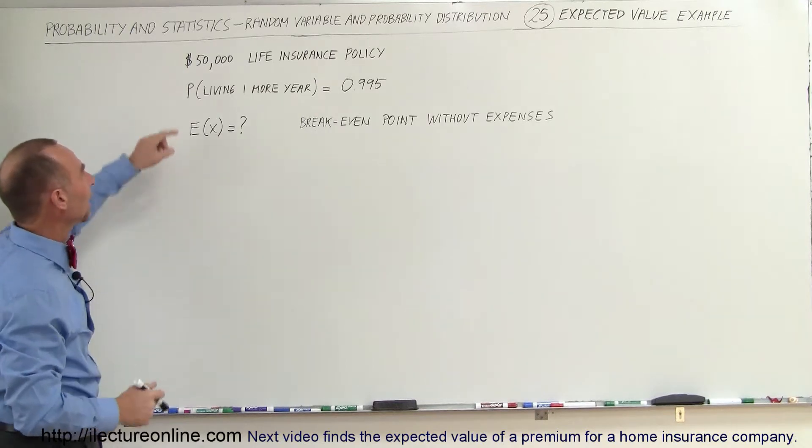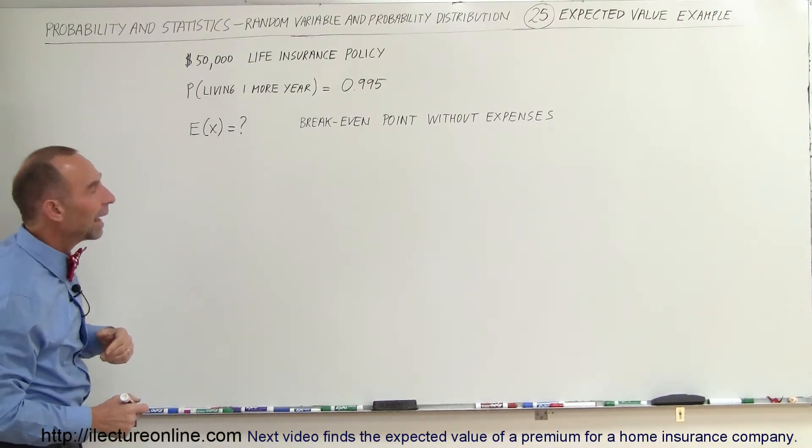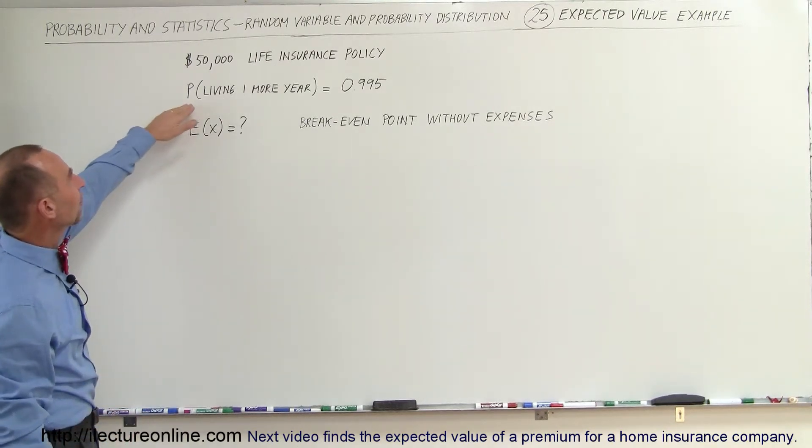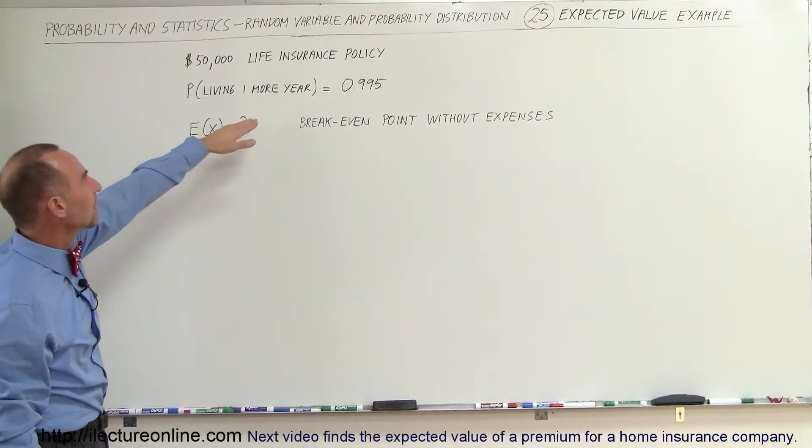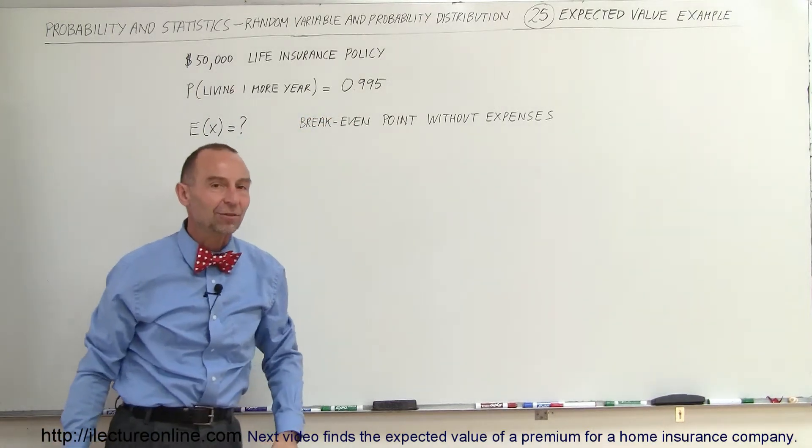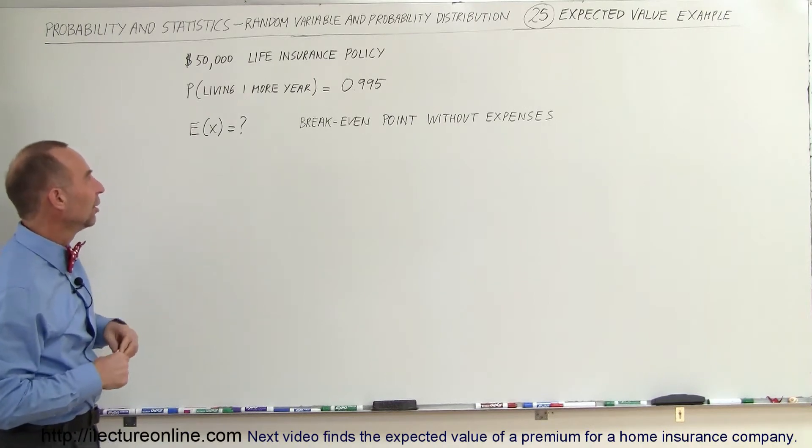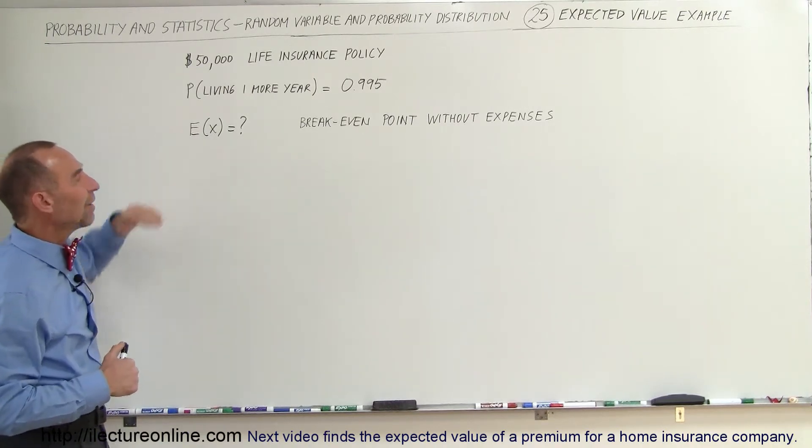So let's say you want to buy a $50,000 life insurance policy and for a person of your age and your gender, you have the probability of living one more year of 0.995. So 99.5% probability that you'll still be alive at the end of this next year. So what would be the expected value?